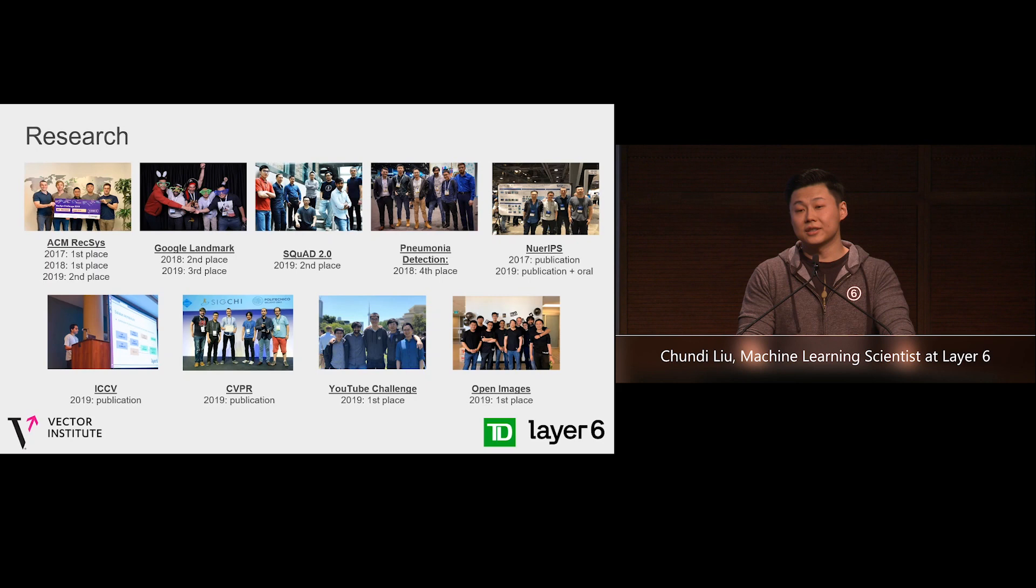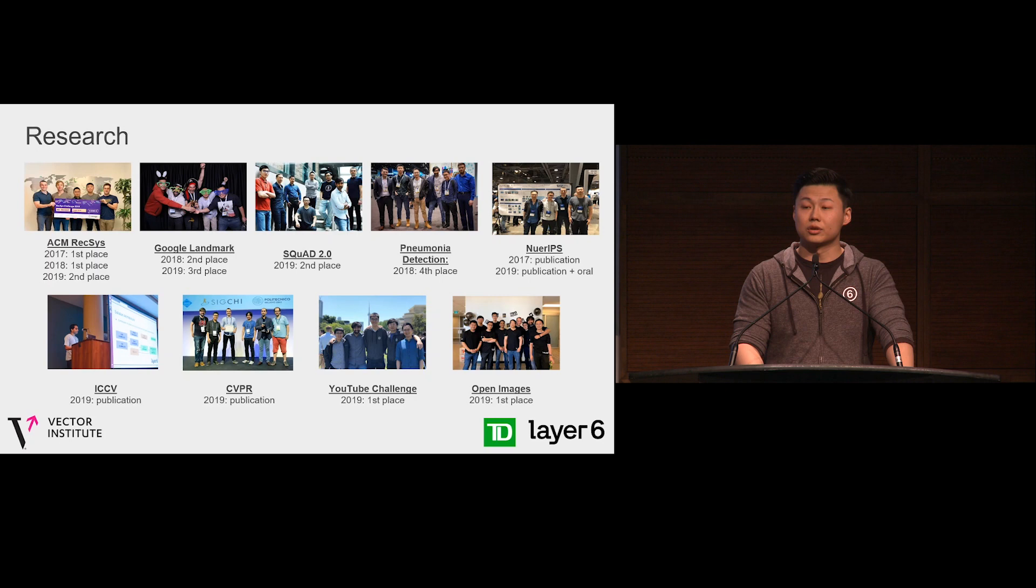For those who don't know much about us, Layer 6 was a Toronto-based AI startup founded in 2017, and we got acquired by TD Bank in 2016. After the acquisition, we are still able to keep our Layer 6 brand identity, maintain our startup culture, and also keep operating as an independent AI lab.